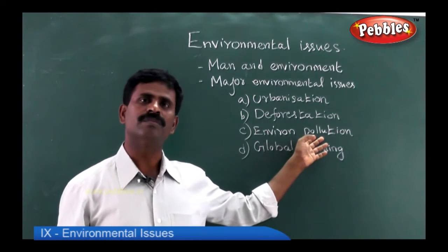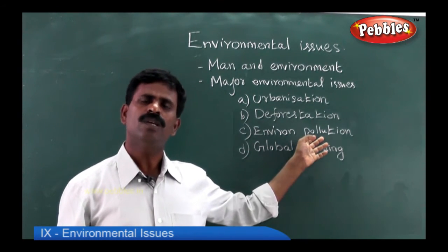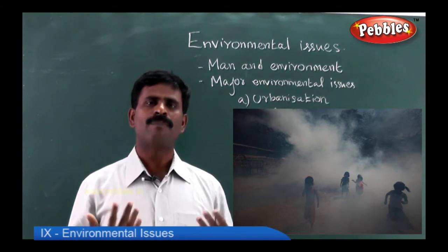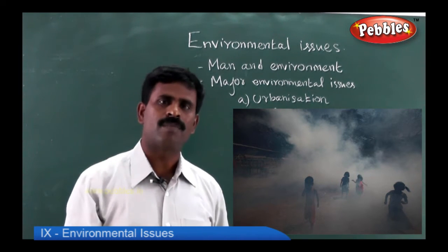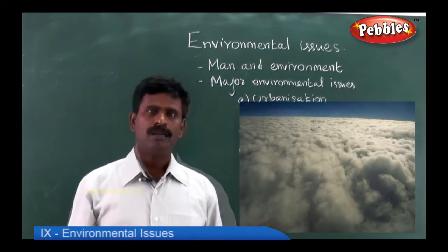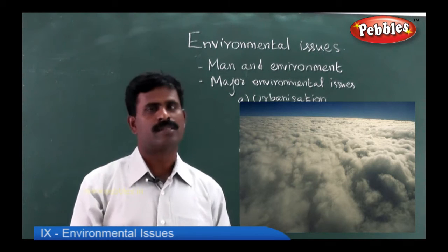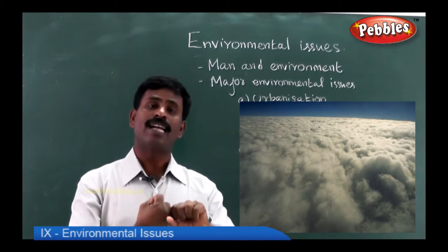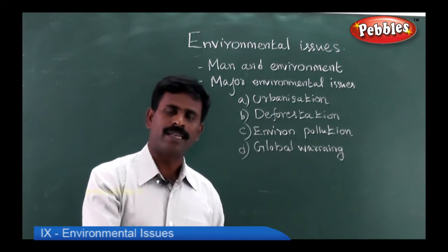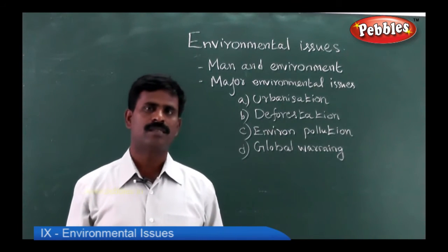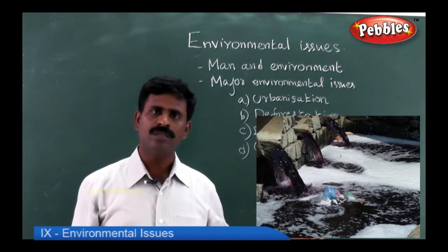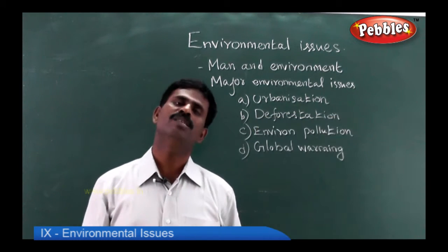The next issue is environmental pollution. What is pollution, dear children? Pollution is the undesirable effect on the environment. It can be in the form of pollutants, in the form of harmful gases, or in the form of a river getting contaminated. Pollution is of three types: air pollution, water pollution, and noise pollution.